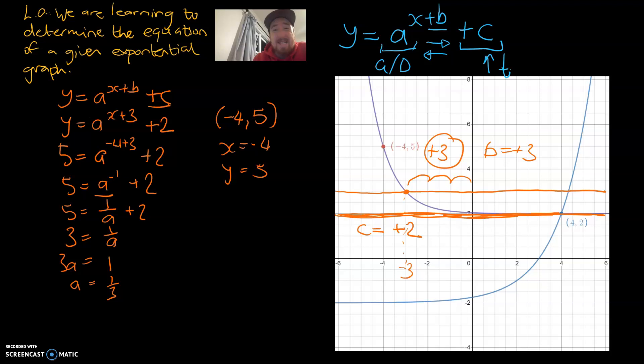And so we've now got a, b and c we can finalize with our little formula so y is going to be equal to one third to the power of x plus three and we're going to add two to that as well so that one is a bit complicated so if you got that one well done.